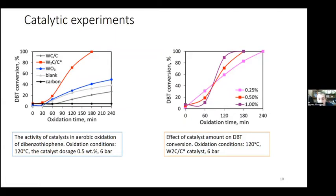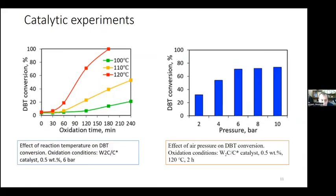The conversion drops sharply with a decrease in temperature, which is in agreement with literature data. This effect is due to the activation of atmospheric oxygen, which occurs at temperatures above 110 degrees Celsius. Temperature of 120 degrees is optimal because this is the minimum temperature at which it is possible to achieve exhaustive complete oxidation of the substrate.